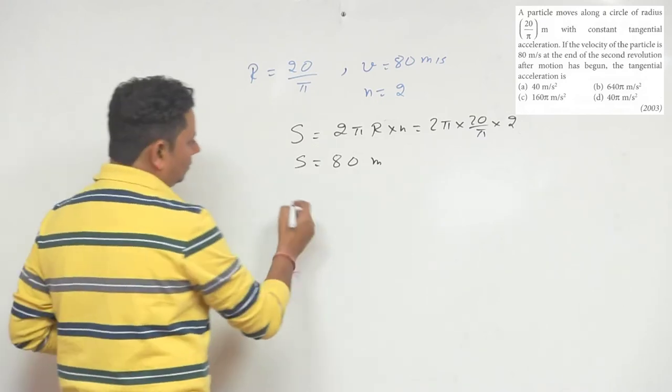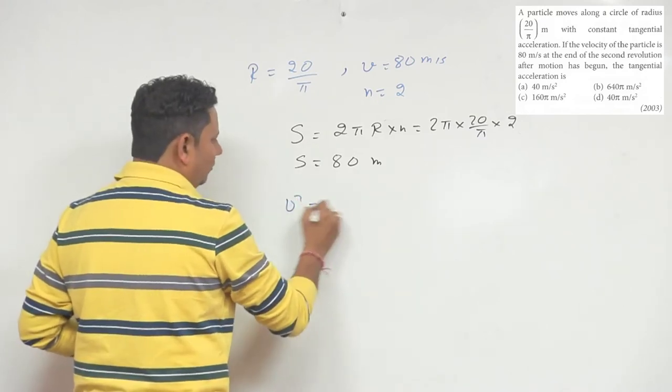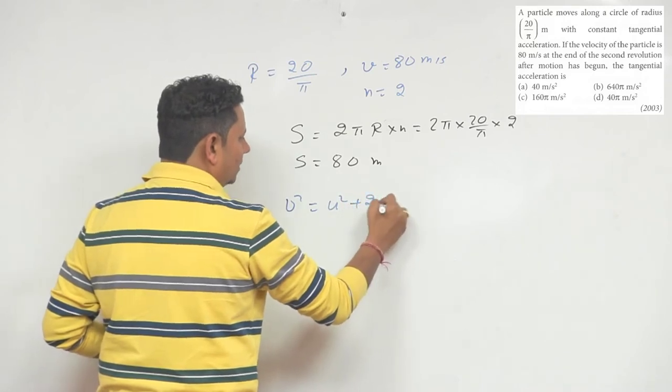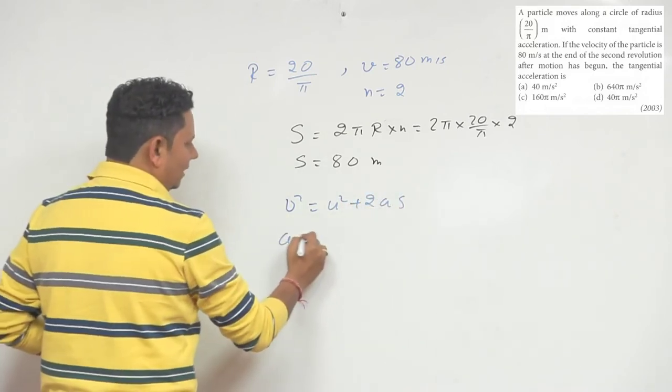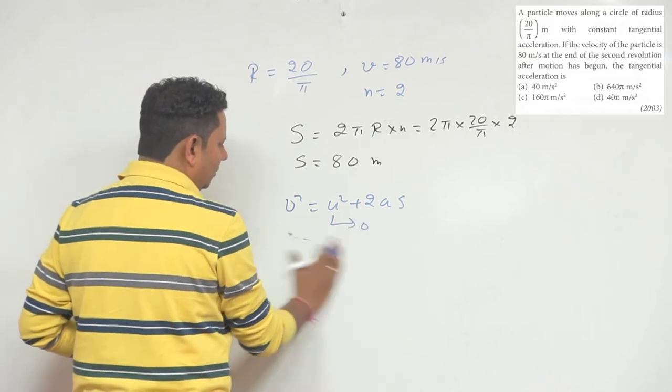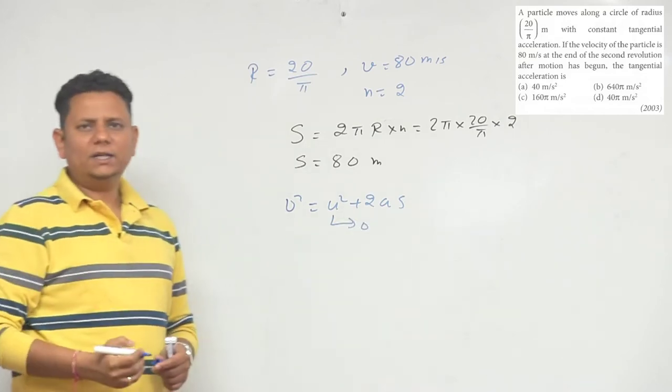We can say v² = u² + 2as. In this case we can say the value of u we can take as zero because the particle was initially at rest, started from rest.